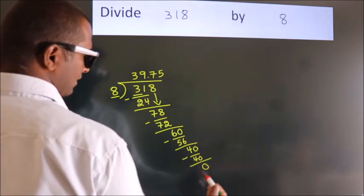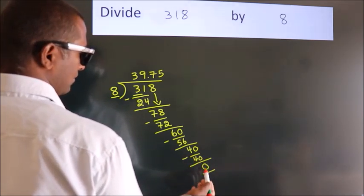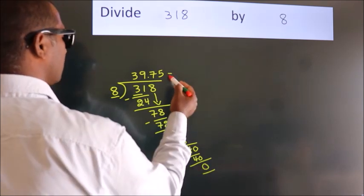Here, we got remainder 0. So, this is our quotient.